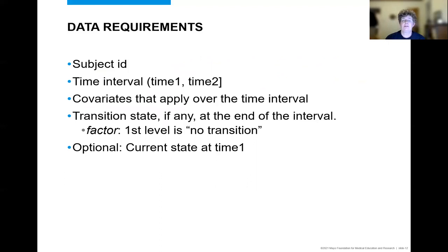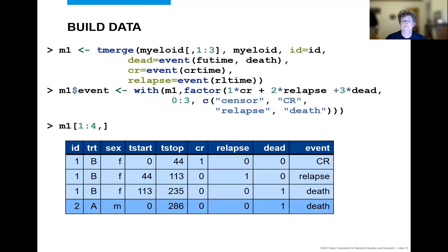Data setup is the most important step, and there are certain requirements for multi-state data. Specifically, there must be a subject ID, and the endpoint, instead of being a numeric 0-1 value, must be a factor. The first level of the factor indicates no transition. In certain scenarios, you may have subjects who begin studying different states, and that's perfectly fine. Here, the T-merge function is used to create the desired dataset. T-merge can be called sequentially or grouped together, as is shown here. The first new event, called dead, specifies the full length of follow-up and the ending status of one or zero, indicating death or censor. The next event looks at CR time and splits the subject's follow-up if there is a time listed. The new variable CR is created indicating that there is an event at the end of this new interval.